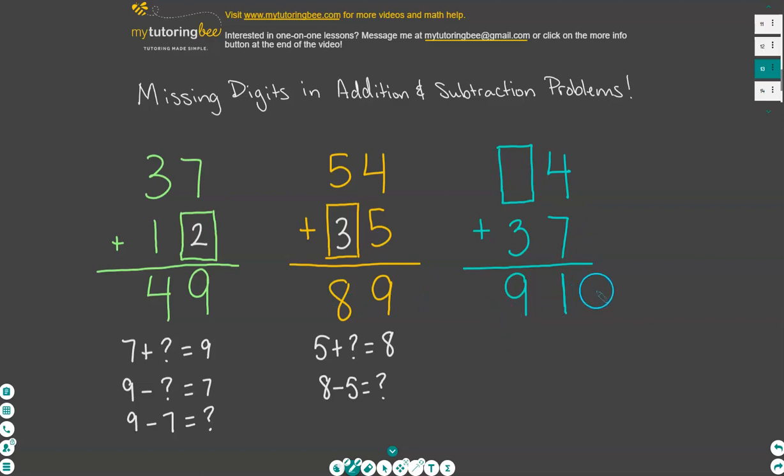All right, let's take a look at this last addition problem. Again, we're going to start with the 1's place. We don't want to just jump into the 10's place right off the bat. If you do look at the 10's place first, you might think that this number is 6, because 6 plus 3 does equal 9. However, let's take a look at our 1's place first. 4 plus 7 equals 1.